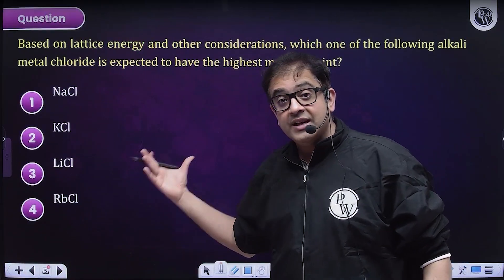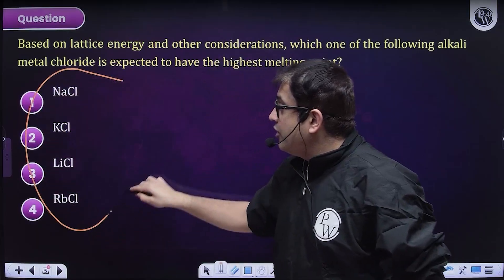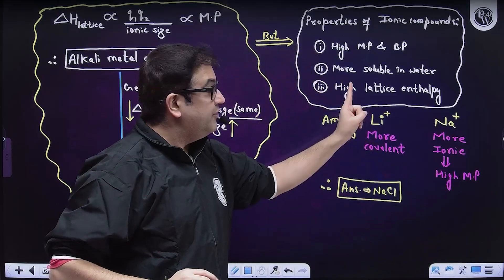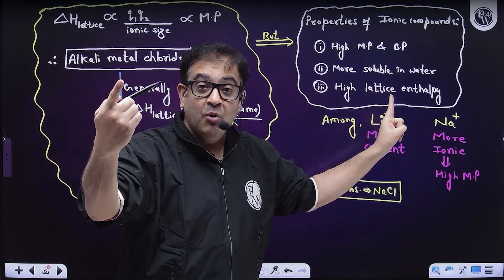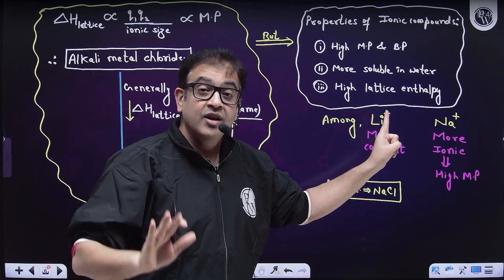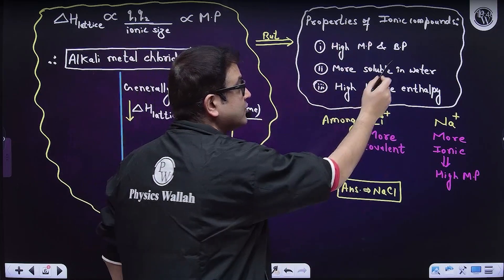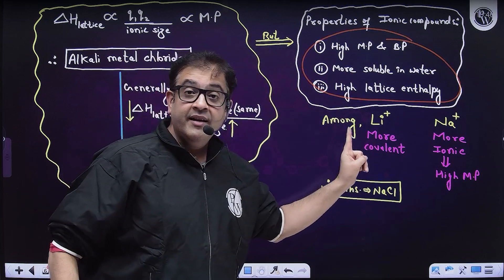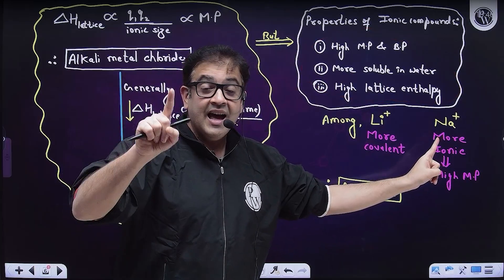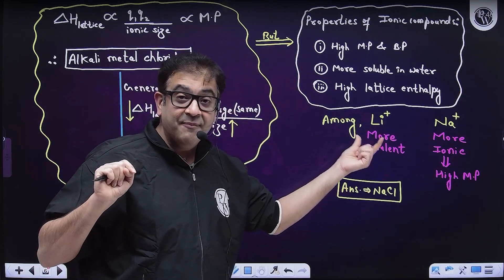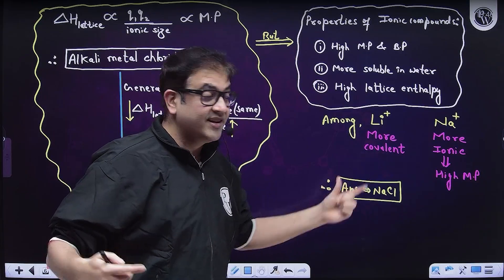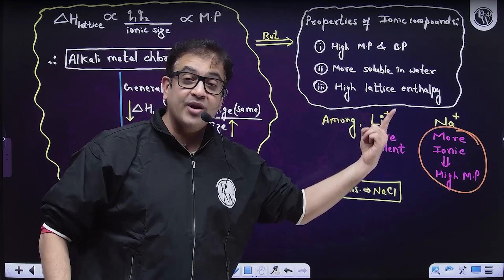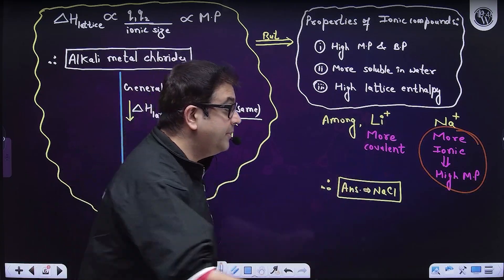Moving to next question which says, among these salts which is having highest melting point. We already discussed Fasan's rule and we know if a salt is having more covalent character, it will have less ionic character, and therefore less of these properties which an ionic compound is supposed to have.